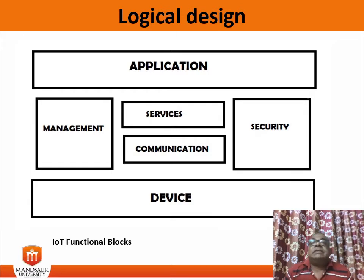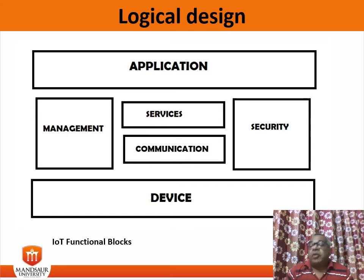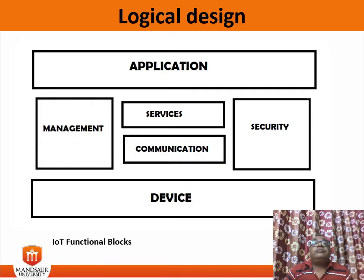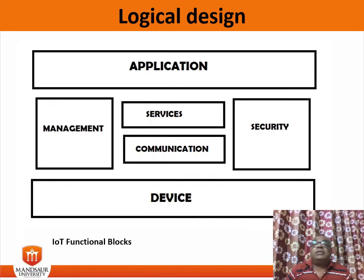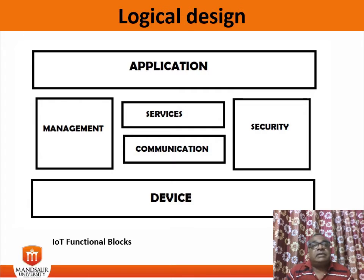The devices: an IoT system comprises devices that provide the sensing, actuation, monitoring, and control functions. The communication block handles the communication for the IoT system. Services include device monitoring, device controlling services, data publishing services, and services for device discovery.